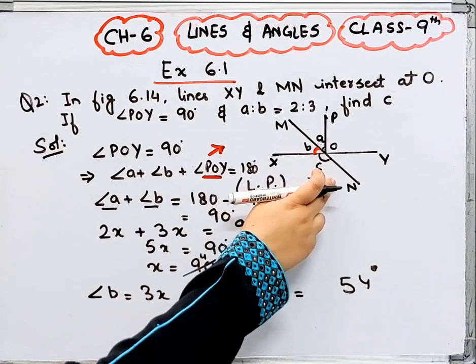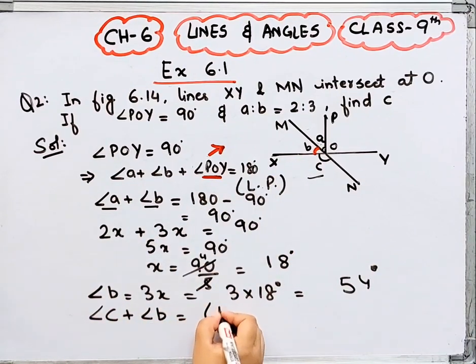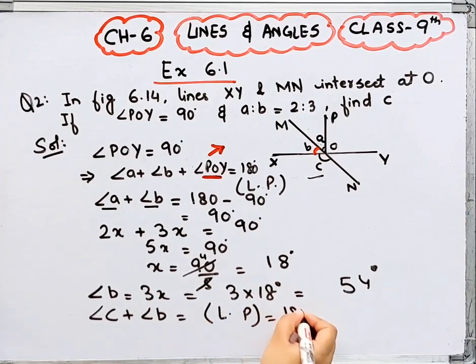Now you have to find out C. So I know angle B plus angle C, they are forming linear pair. So how much is it? 180 degrees.